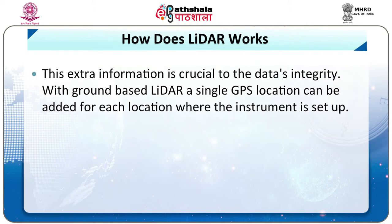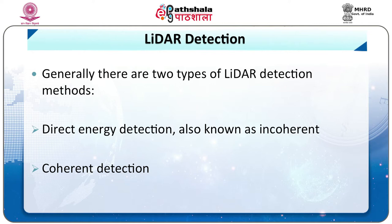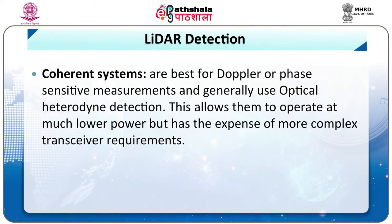With ground-based LIDAR, a single GPS location can be added for each location where the instrument is set up. Generally, there are two types of LIDAR detection methods. The first is direct energy detection, also known as incoherent detection. Coherent systems are best for Doppler or phase-sensitive measurements and generally use optical heterodyne detection. This allows them to operate at much lower power but has the expense of more complex transceiver requirements.